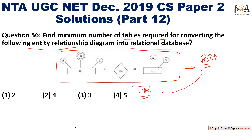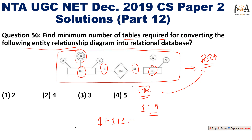If you observe the entity relationship diagram clearly, you can see a one-to-many relationship is given to us. For relation R1, we need one table. We will also require one separate table for R2, and you can observe that entity B is multi-valued, so we require one separate table for it. Total three tables are required to convert this ER diagram into a relational database. Option 3 is the correct answer.